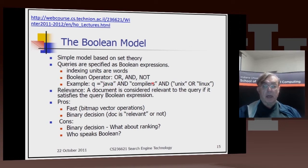We want Java and compilers in the document, and we want it to be Unix or Linux. So we do not get documents about Windows, Java, or compiler.